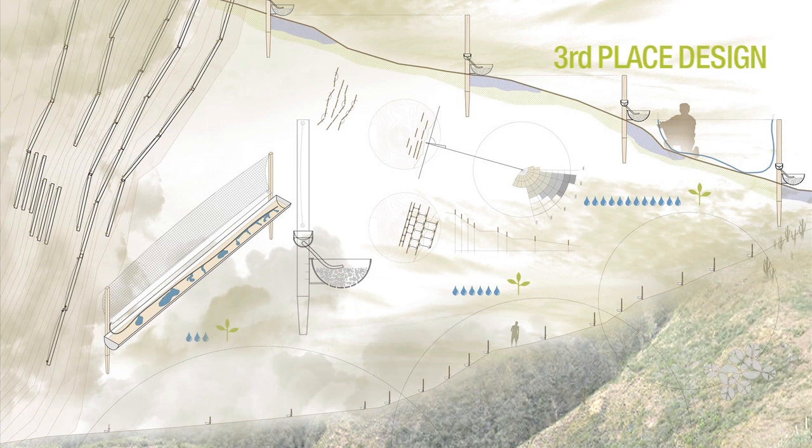Instead of looking for another organism that takes water out of the air, they looked at the landscape patterns around them. On certain hillsides at certain slopes, plants are more efficient at taking water out of the air than in other places. They came up with a set of simple rules that allow farmers to place their mist nets and crops in certain patterns to mimic the natural vegetation.